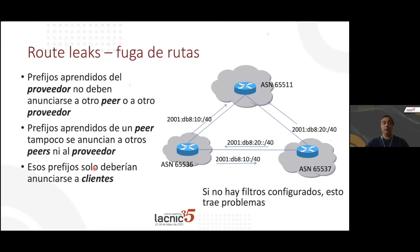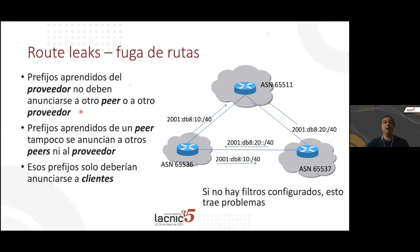What are the types of incidents that we have? A route leak is announcing a set of prefixes outside of their intended scope. We see a prefix and we announce it when we should not. For instance, we have prefixes learned from a provider that should not be announced to another peer or another provider. A transit provider that provides a complete BGP table should not be re-announced to another transit provider, and what we learn from a peer should only be announced to clients.